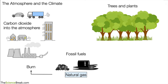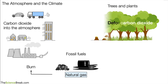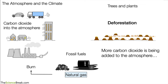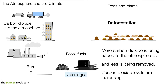On the other side of things, we've got trees and plants. As we said in our previous video, these remove carbon dioxide from the atmosphere through photosynthesis. However, a lot of trees are being cut down through the process of deforestation to provide land, raw materials, and space for farming animals. So overall, more carbon dioxide is being added to the atmosphere by burning fossil fuels and less is being removed, meaning carbon dioxide levels in the atmosphere are increasing.